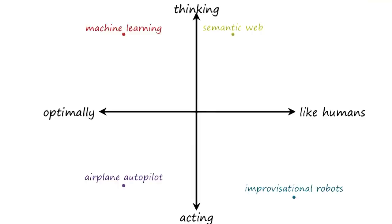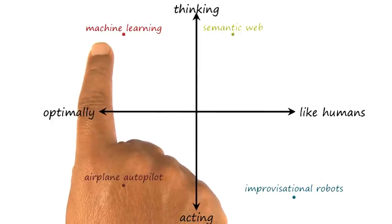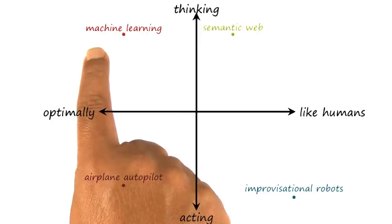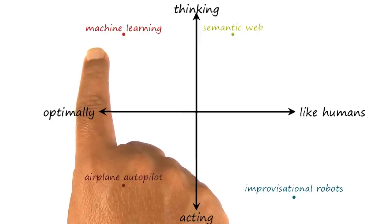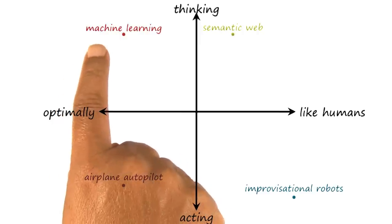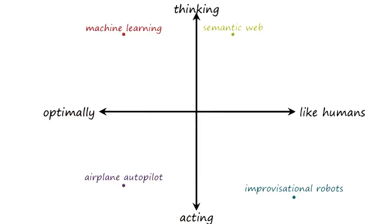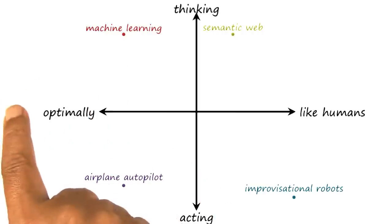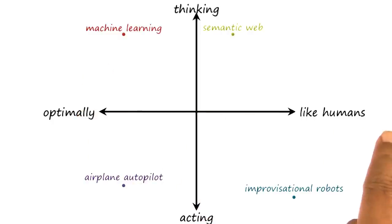Here are some well-known computational techniques. Consider many machine learning algorithms. These algorithms analyze large amounts of data and determine patterns of regularity in the data. I might think of them as being in the top left quadrant. They're certainly doing thinking, and they often are optimal, but they're not necessarily human-like.